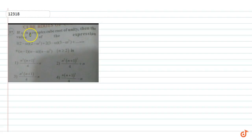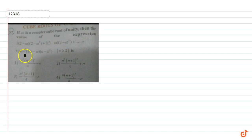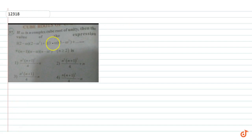In this question, if ω is a complex cube root of unity, then the value of the expression: 1·(2-ω)(2-ω²) + 2·(3-ω)(3-ω²) + ... up to (n-1)·(n-ω)(n-ω²).